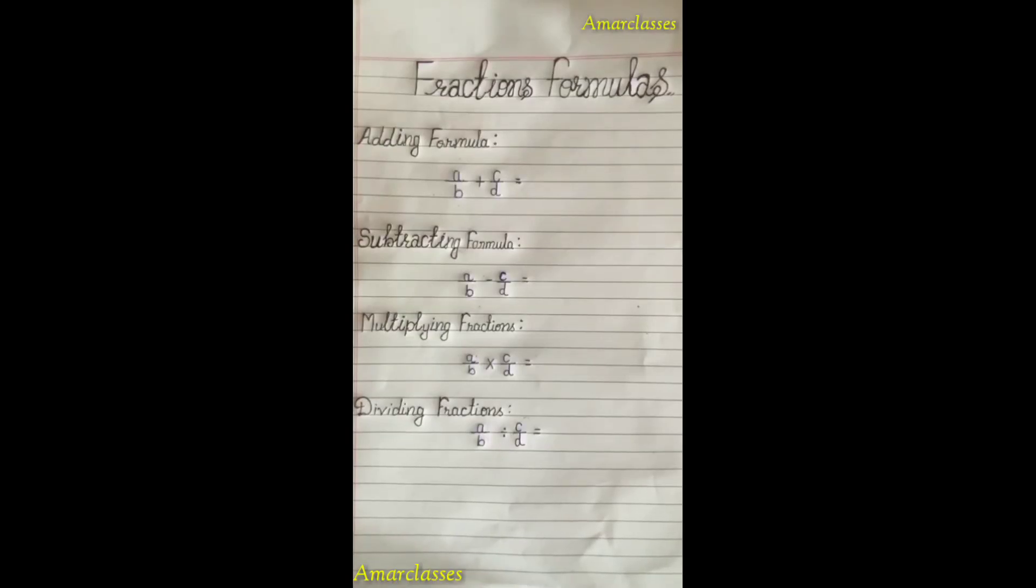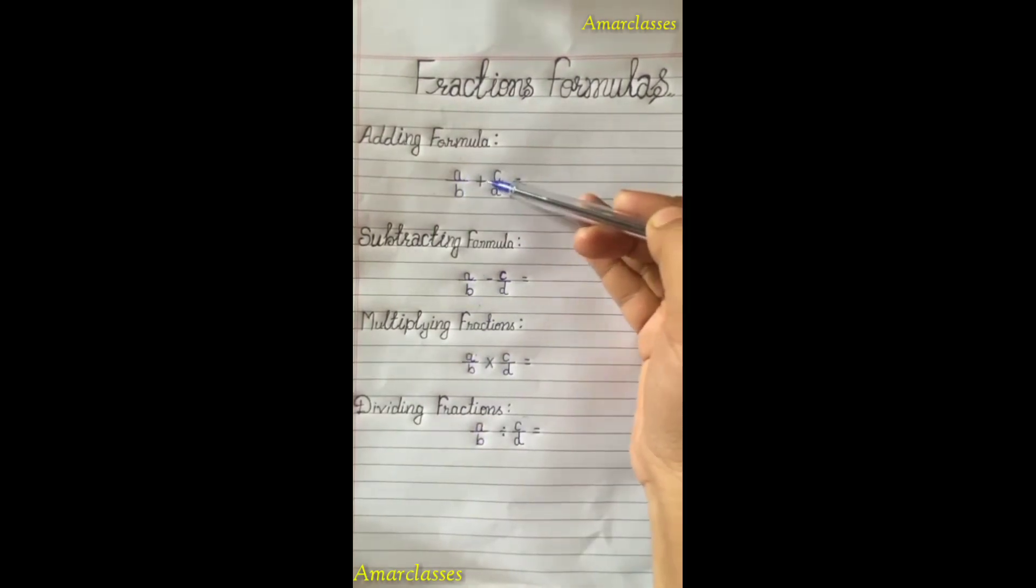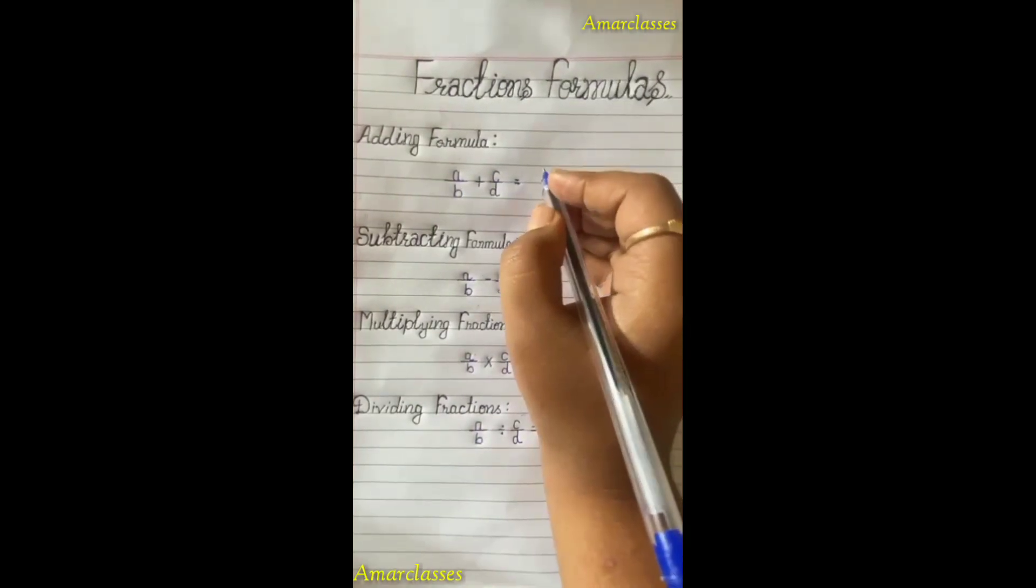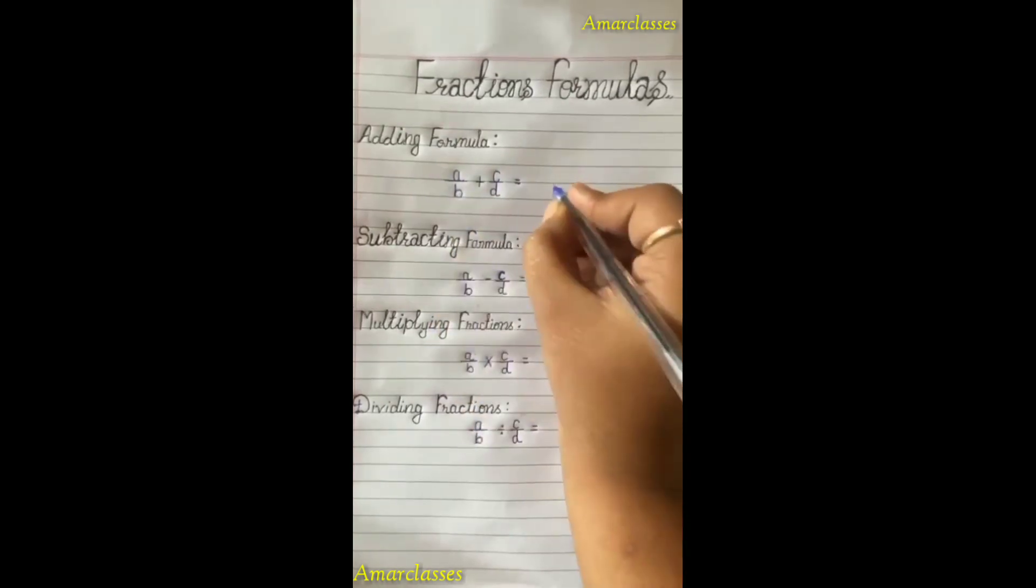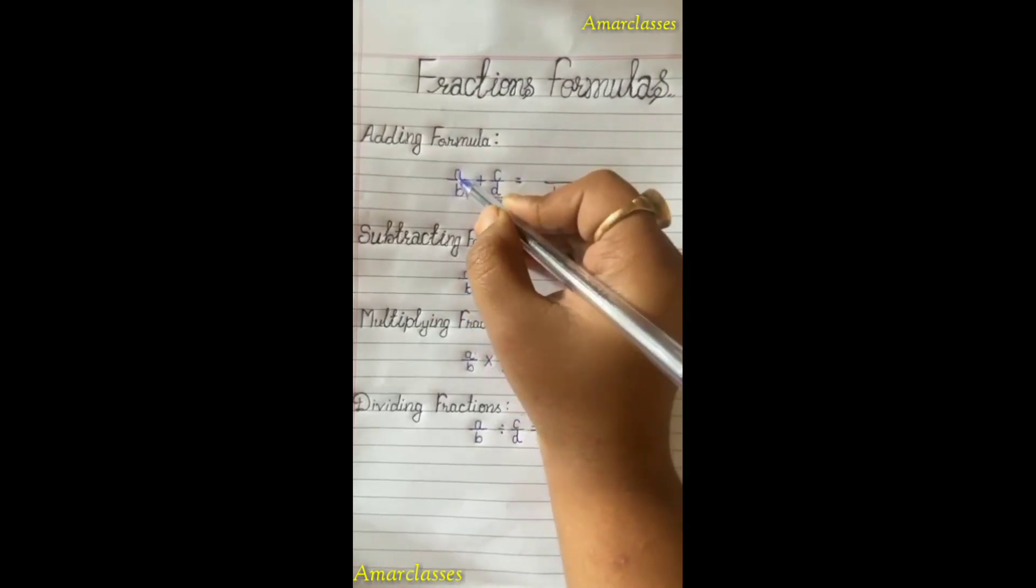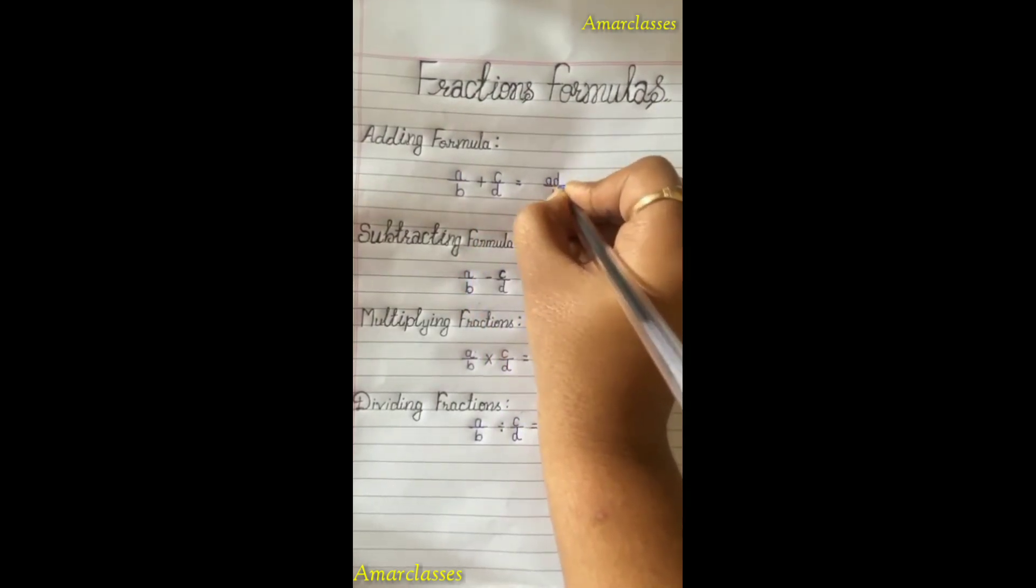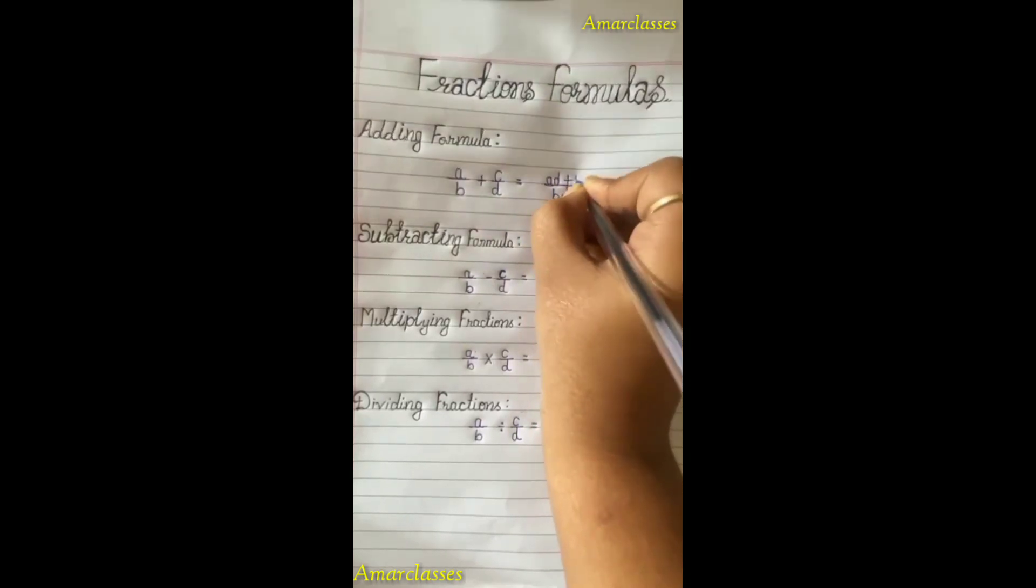Hello everyone, today we are going to know the formulas of fractions. First one is adding formulas: a by b plus c by d equals, first we take LCM bd, and now cross multiply ad plus bc.